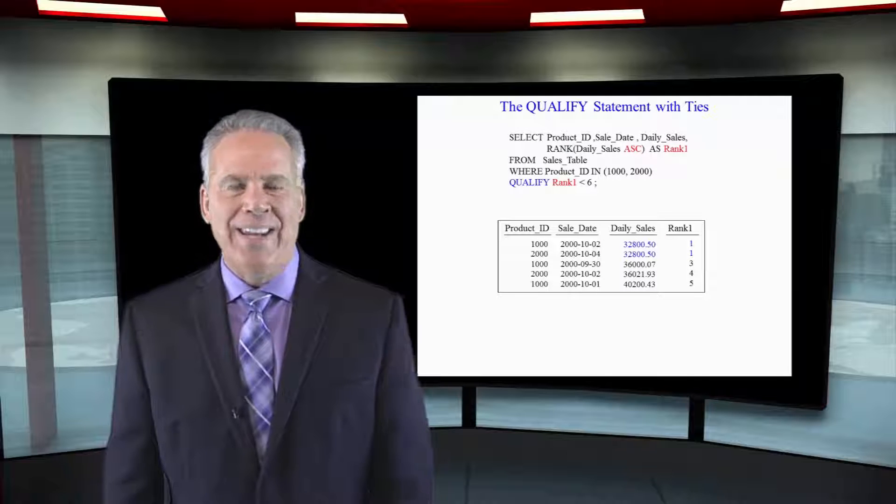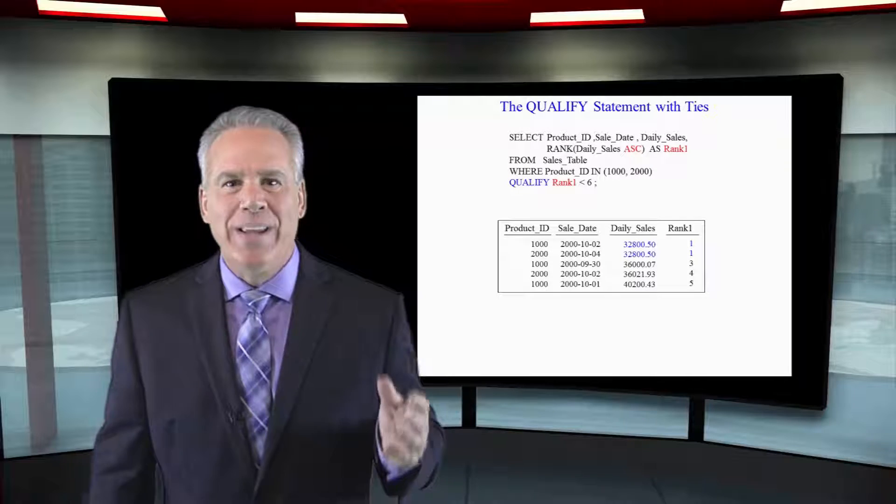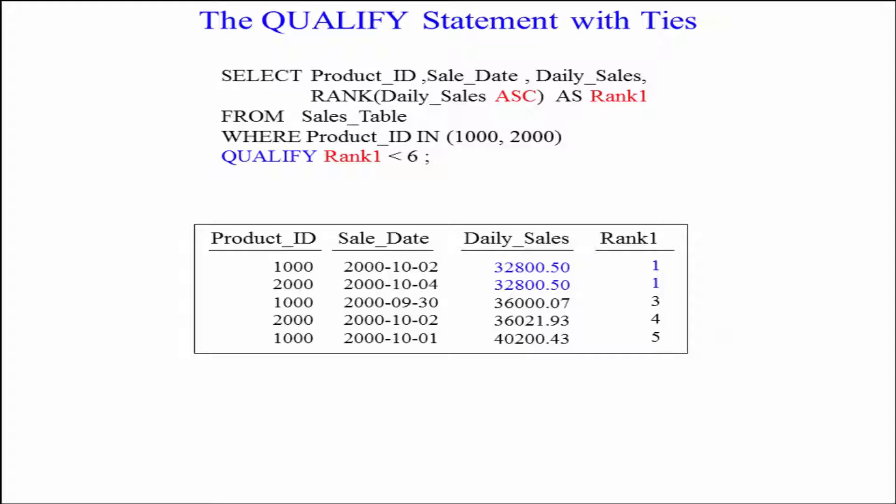Now that we're ranking in ascending mode, we can see that the first two lowest daily sales were tied. So the first one got a rank of one. The second one got a rank of one. You would think the third one would go, I'm ranked second.